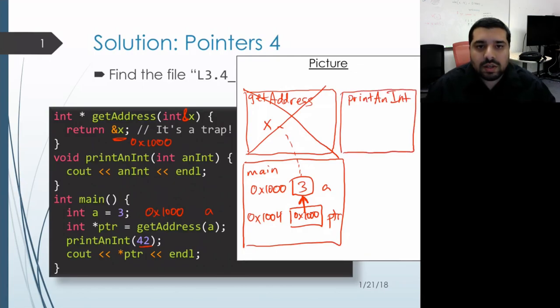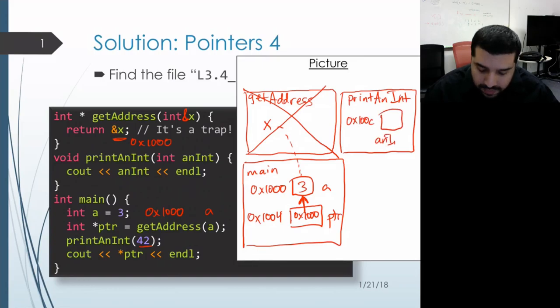And within that activation record, we have space for the parameter. And so let's assume it gets placed at address 1000C. Then the next step is to initialize the parameter using the argument value. So we initialize that object with value 42. Then we run the code inside of printAnInt. It prints out the value of anInt which is 42. Then the function returns, which causes this activation record to go away.